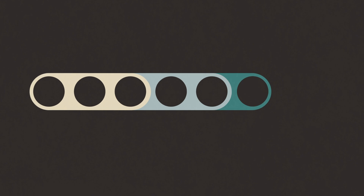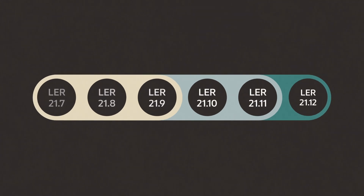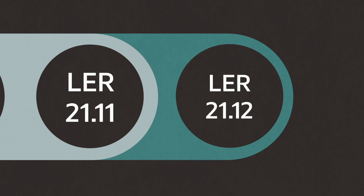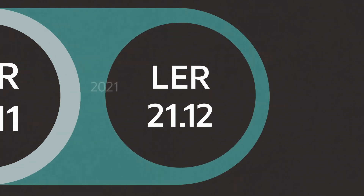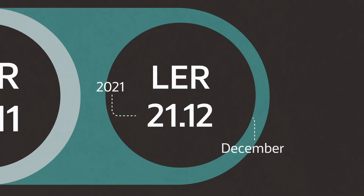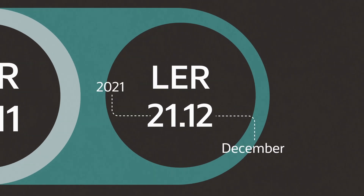The LER version sequence is the calendar year followed by the month. For example, 21.12 means 2021, December.